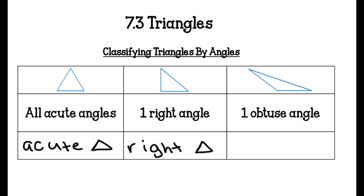These are really hard to memorize. The third one — if it has one obtuse angle, it is an obtuse triangle. So if you understood your angles, it just carries over to triangles. The classifying by angles should be the simpler part of it for you.